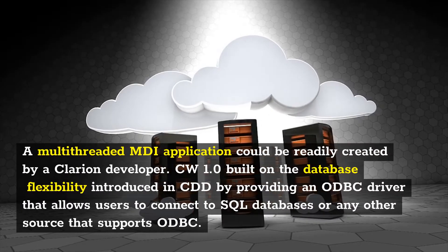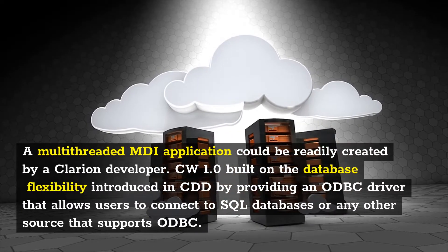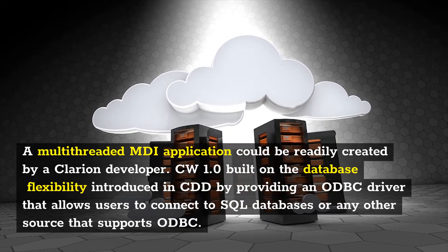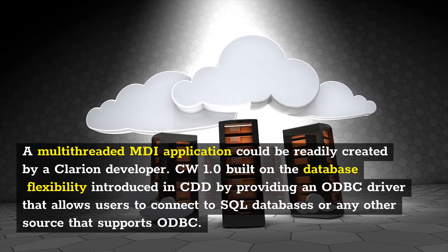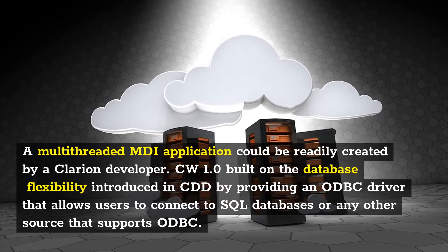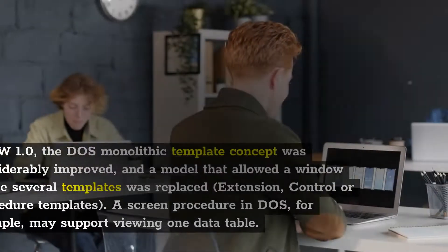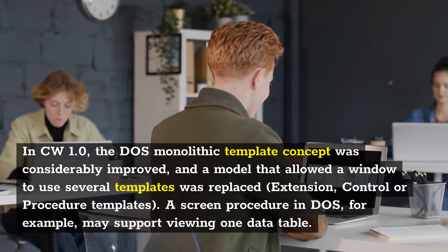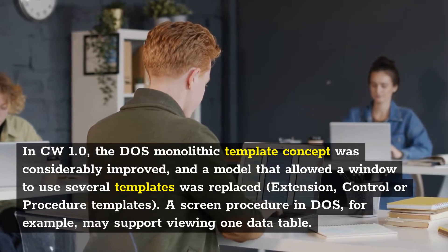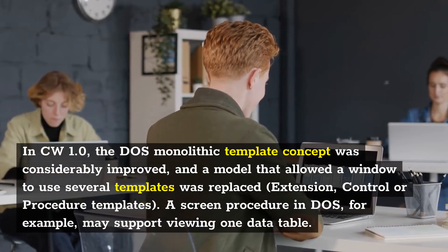A multi-threaded MDI application could be readily created by a Clarion developer. CW 1.0 built on the database flexibility introduced in CDD by providing an ODBC driver that allows users to connect to SQL databases or any other source that supports ODBC. In CW 1.0, the DOS monolithic template concept was considerably improved, replaced by a model that allowed a window to use several templates.